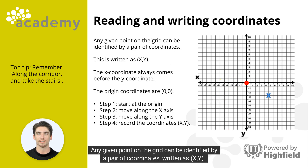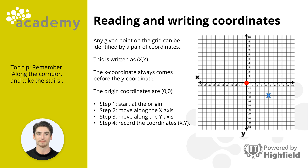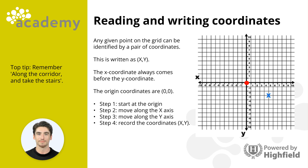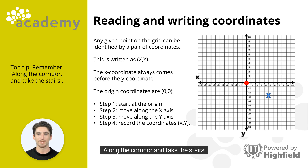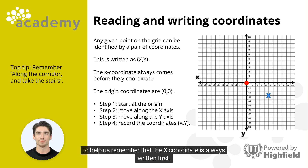Any given point on the grid can be identified by a pair of coordinates, written as (x, y). The x-coordinate always comes before the y-coordinate. For example, the coordinates for the blue cross shown on this grid are (5, minus 3). We can use the phrase 'along the corridor and take the stairs' to help us remember that the x-coordinate is always written first.